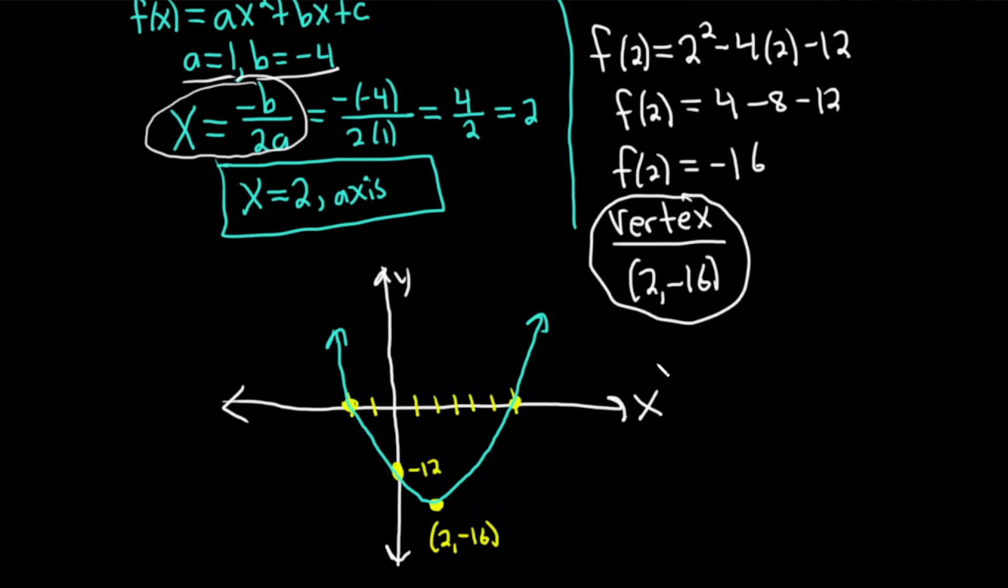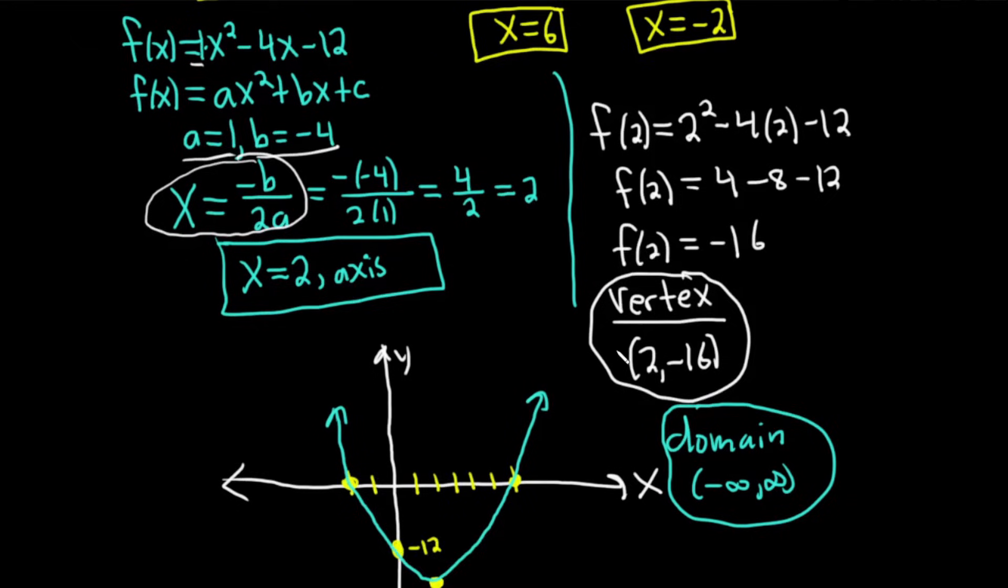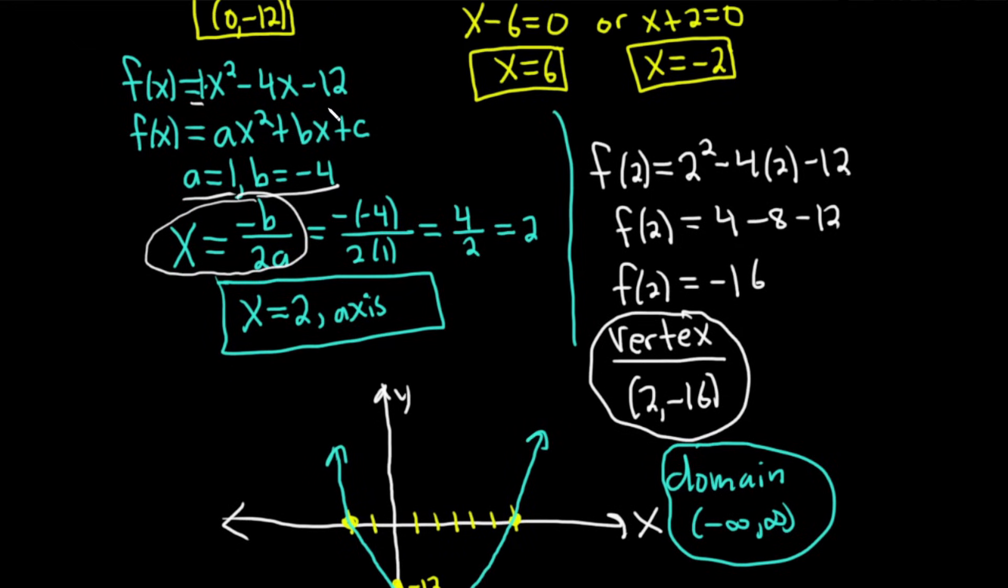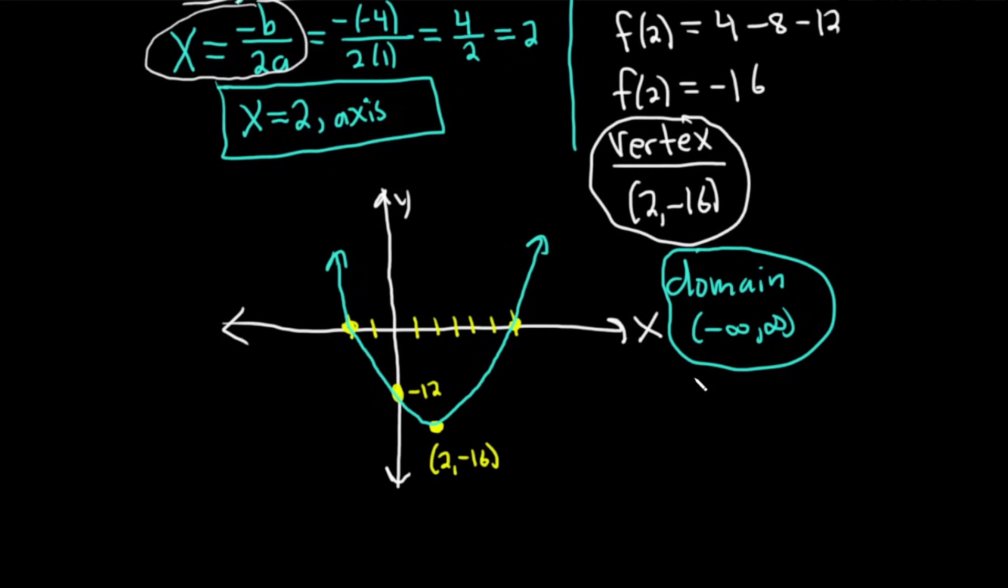Now we can find the domain. The domain is all of the x's that you can plug into this function. Well, all real numbers. There's no issues. If you look at the graph, I can pick any x and I'm going to get a y value. There's nothing funky going on. So the domain is negative infinity to infinity. Also, if you look at your function, f(x) = x² - 4x - 12, there's no fractions or anything. So all is good.